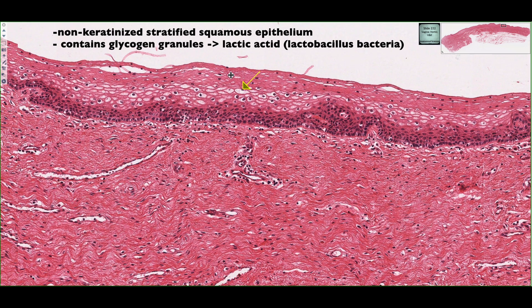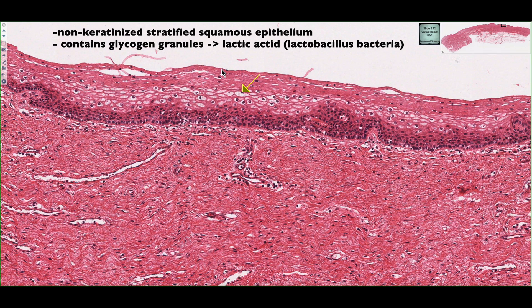These cells store and eventually release glycogen granules at the surface of the epithelial lining. The glycogen granules are converted into lactic acid by lactobacillus bacteria found within the vaginal canal, and the lactic acid reduces the pH, providing an unfavorable environment for pathogens or other bacteria to flourish.